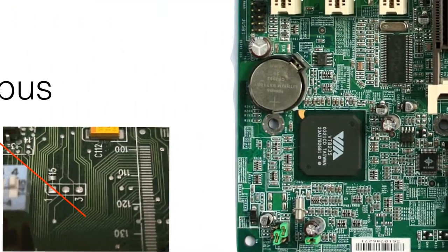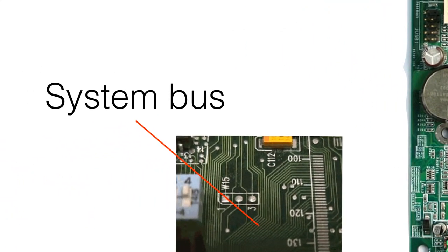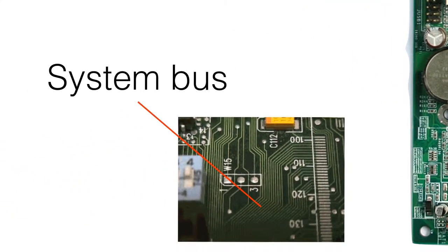Next we have the system bus, which is the connecting cables on the motherboard. These are the computer wires which connect different components together on the motherboard. But in computer technology, we call them a system bus. Bus means wire. These buses are responsible for transmitting programs and information between different components.